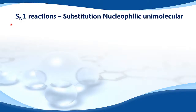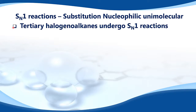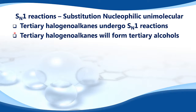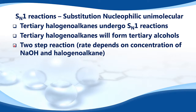Next, let's look at SN1 reactions — Substitution Nucleophilic Unimolecular. Tertiary halogenoalkanes undergo SN1 reactions and will form a tertiary alcohol. It's a two-step reaction, and the rate depends on the concentration of the NaOH and the halogenoalkane.